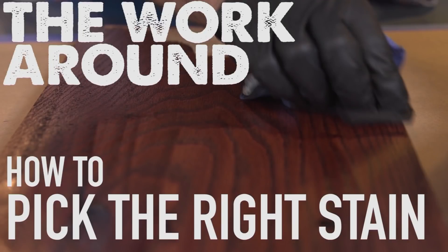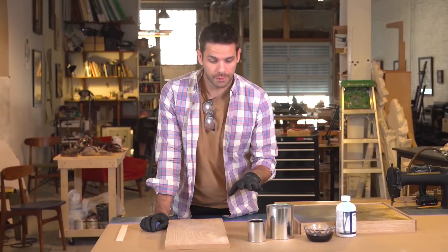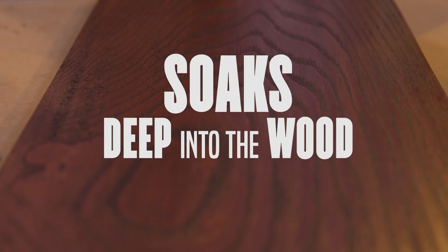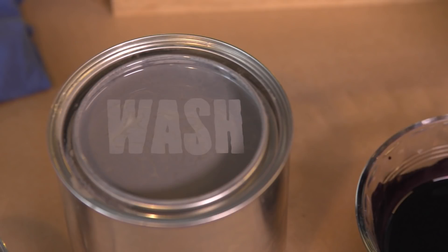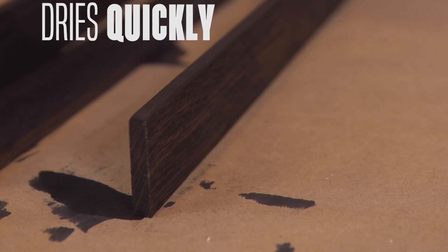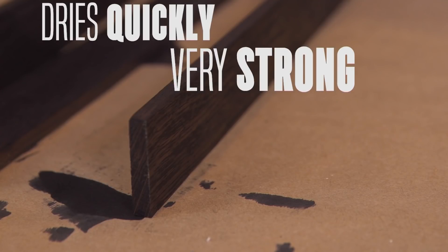When you want to alter the color of your project, you have some options. Here, I have three. A stain, designed for the pigments to penetrate deeply into the wood. A wash, designed to be slightly more on the surface. And a dye, which is similar to a stain, but it dries more quickly and is very strong.